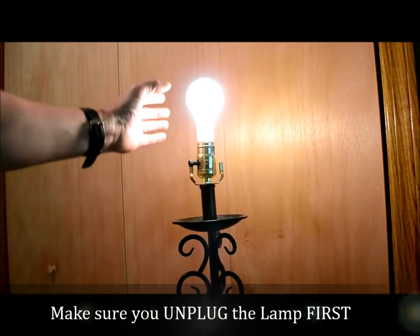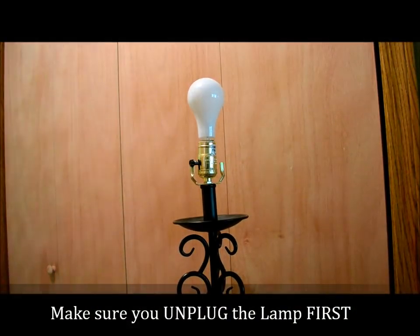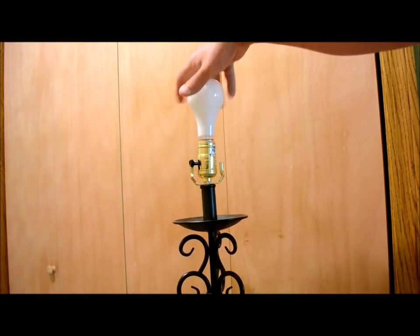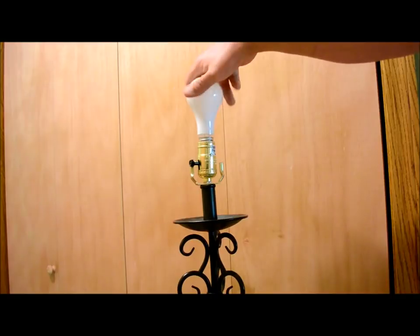First step you want to do is unplug it and then take out the light bulb. So let me go and unplug it, take out the three-way light bulb and here's what we're going to install.